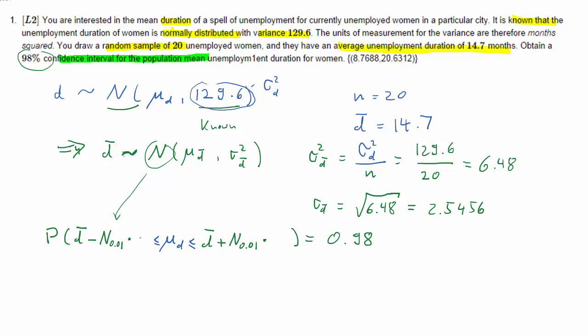Firstly some value from our distribution, in our case the normal distribution, and that multiplied with the standard deviation of d bar. D bar we knew was 14.7.